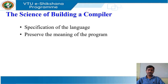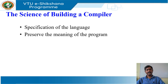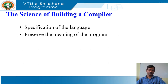A compiler must accept all source programs that conform to the specification of the language. The set of source programs is infinite and any program can be very large, consisting of possibly millions of lines of code. Any transformation performed by the compiler while translating a source program must preserve the meaning of the program being compiled. Compiler writers thus have influence over not just the compilers they create, but all the programs that their compilers compile, making compiler writing particularly rewarding.